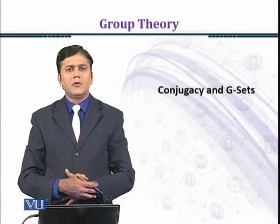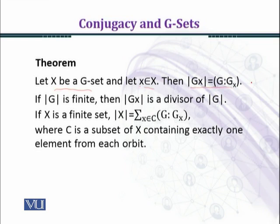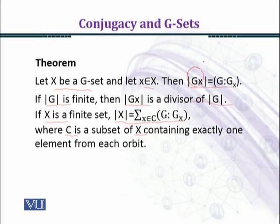In this module we shall continue the proof of the previous module. Let's recall the statement of the theorem. Let X be a G-set, let x belong to X. Then the order of G_x equals the index of G_x in G. If the order of G is finite, then the order of the orbit G_x is a divisor of G. If X is a finite set, order of X equals sigma over x belonging to C of the index of G_x in G, where C is a subset of X containing exactly one element from each orbit. Here G_x denotes the stabilizer: G_x equals the set of all elements g of G such that g·x = x.